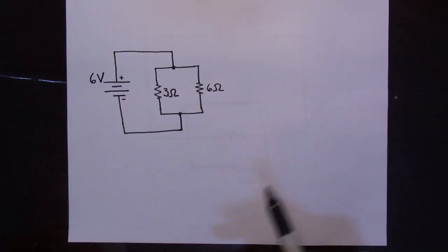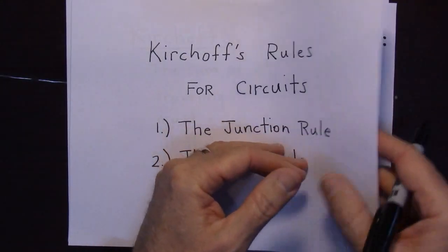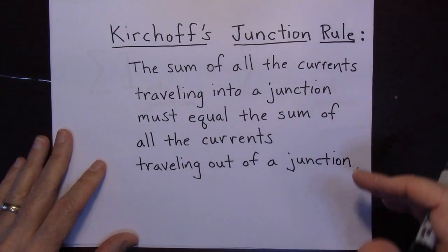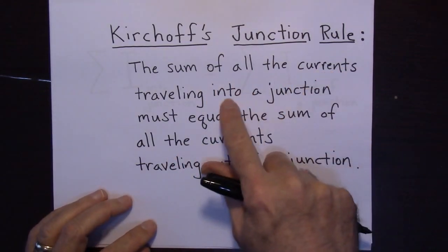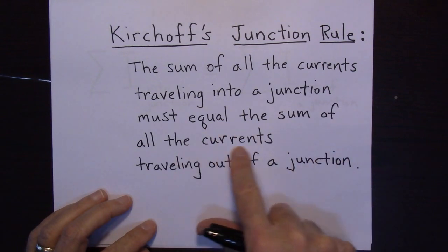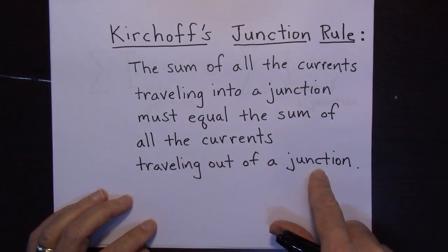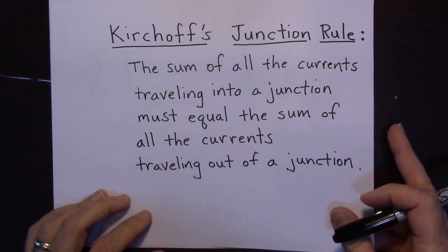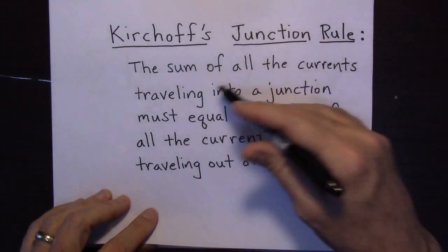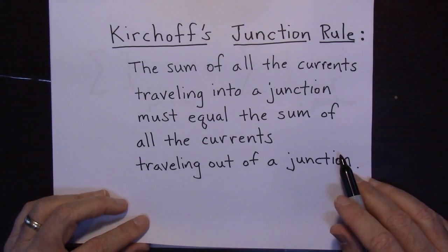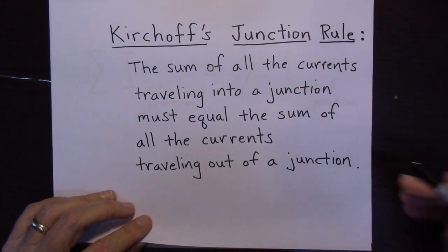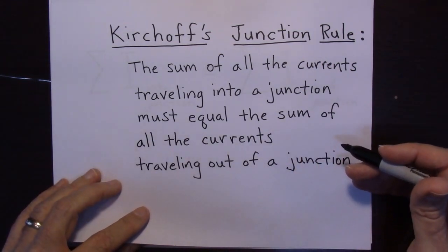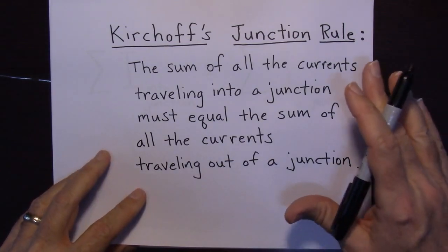The junction rule just says this: for any junction, the sum of all the currents traveling into a junction must equal the sum of all the currents traveling out of a junction. All the currents going into a junction have to equal the currents coming out. That's due to the conservation of charge. So the junction rule has to do with conservation of charge, whereas the loop rule — which I'll cover in the next video — has to do with conservation of energy.